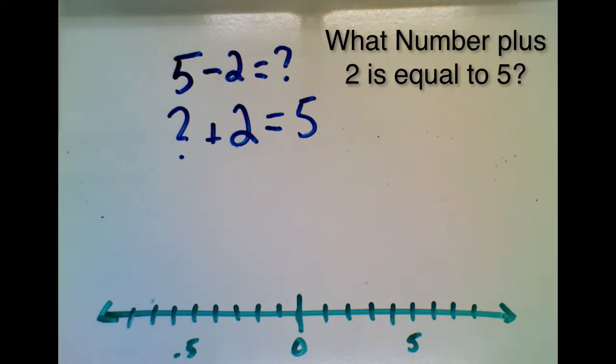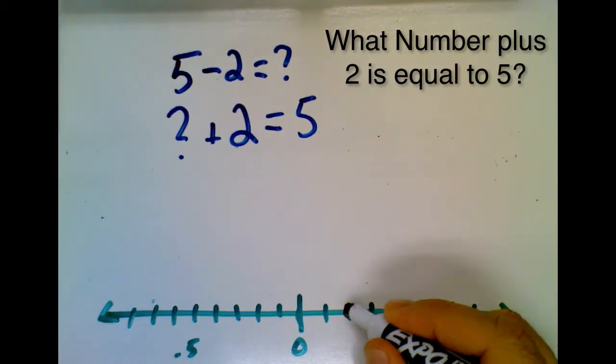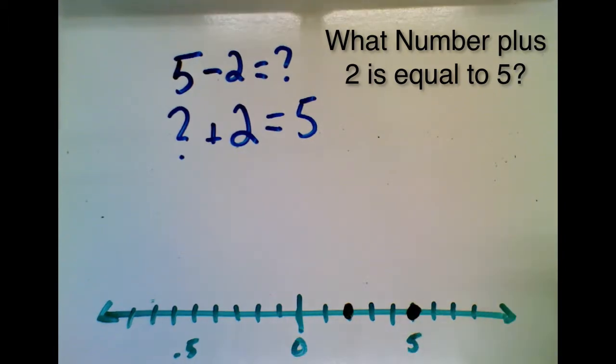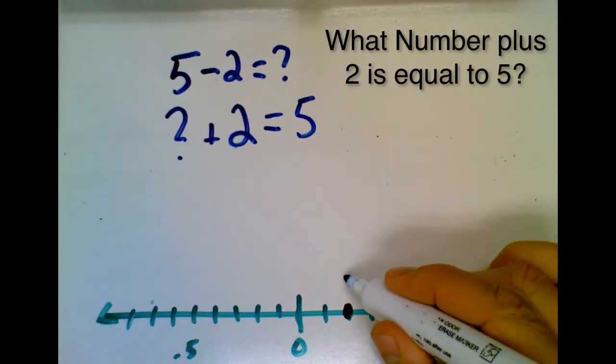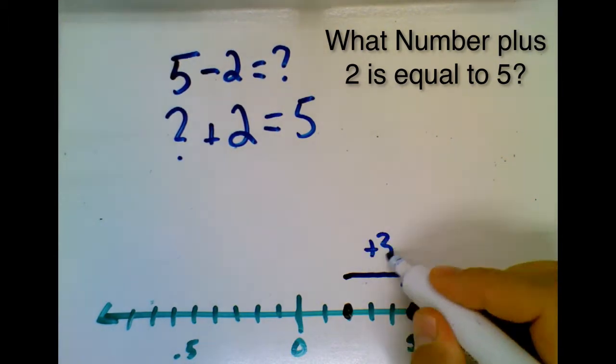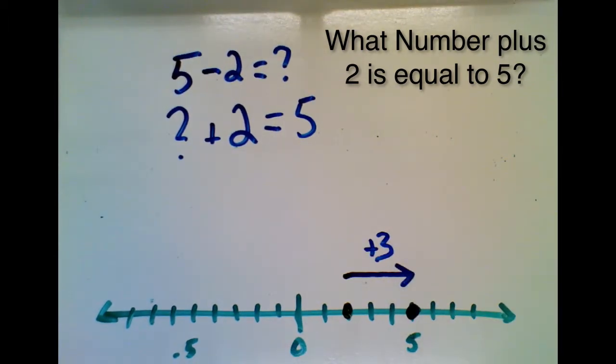So number 2, we start there and that's on the number line here. And 5 is on the number line here. And our answer visually is just the distance from 2 to 5. So we go from 2 to 5 and that's positive 3. So our answer is positive 3.